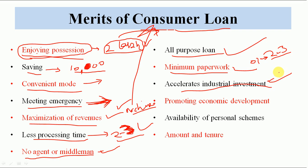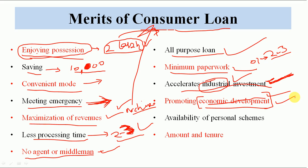Consumer loan promotes industrial investment — you can use your personal loan to buy a washing machine or TV, which you otherwise would not have bought. When people come in large numbers and take personal loans, this drives industry growth and economic development because production increases. You don't have to wait for capital — you can use it right away. If you have good bank accounts and a good repayment history, banks give you favorable schemes.